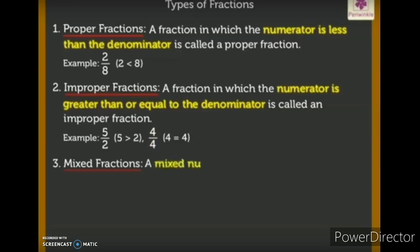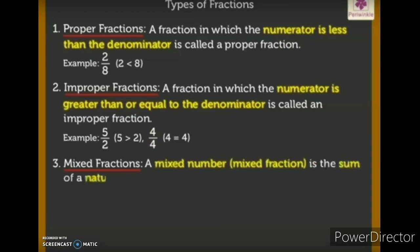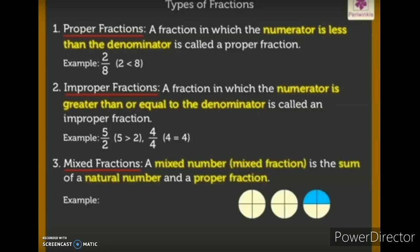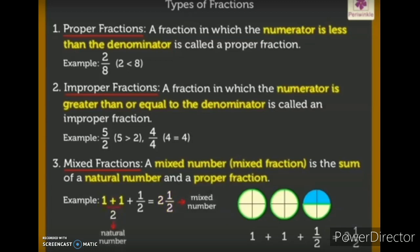The next type of fraction is a mixed fraction. A mixed fraction is the sum of a natural number and a proper fraction. For example, here you can see three circles — two whole circles and one circle divided into one by two. We can write one plus one plus one by two, which in mixed fraction form is two whole one by two, where two is the natural number and one by two is the fraction.